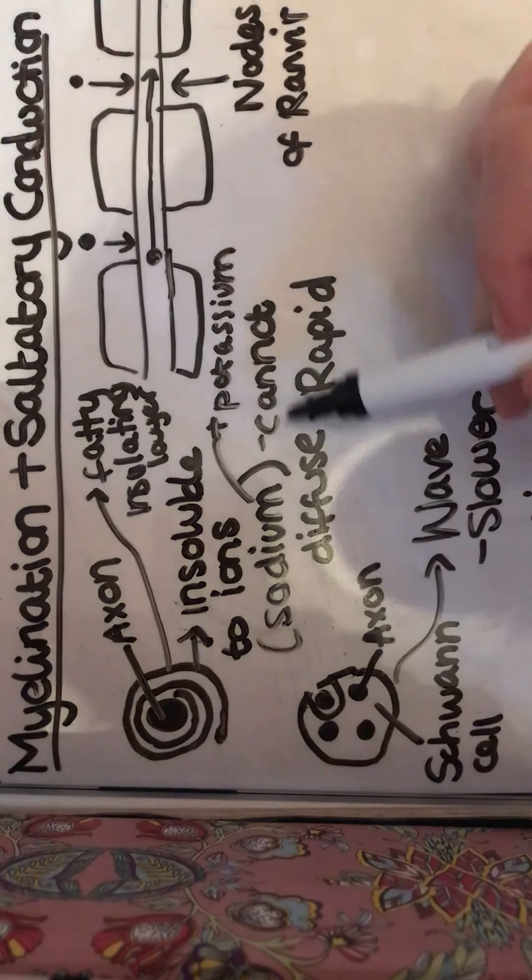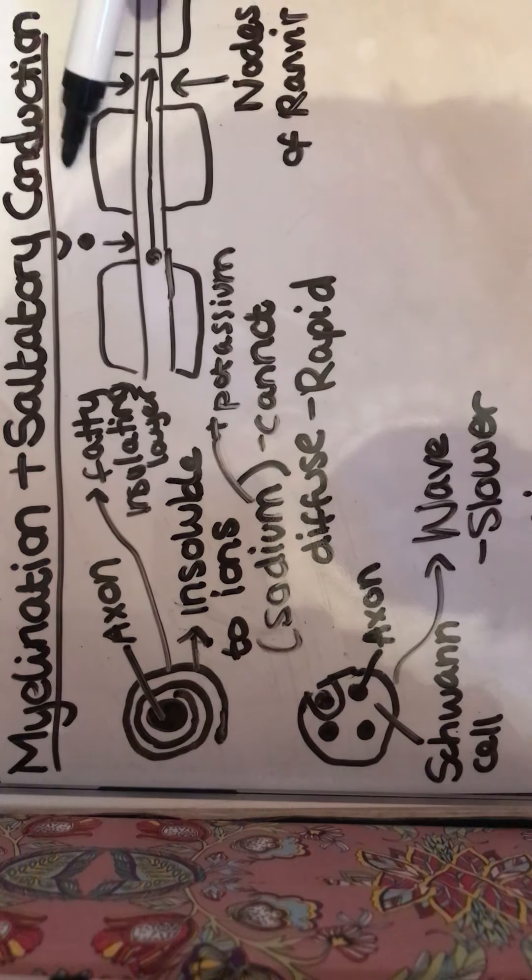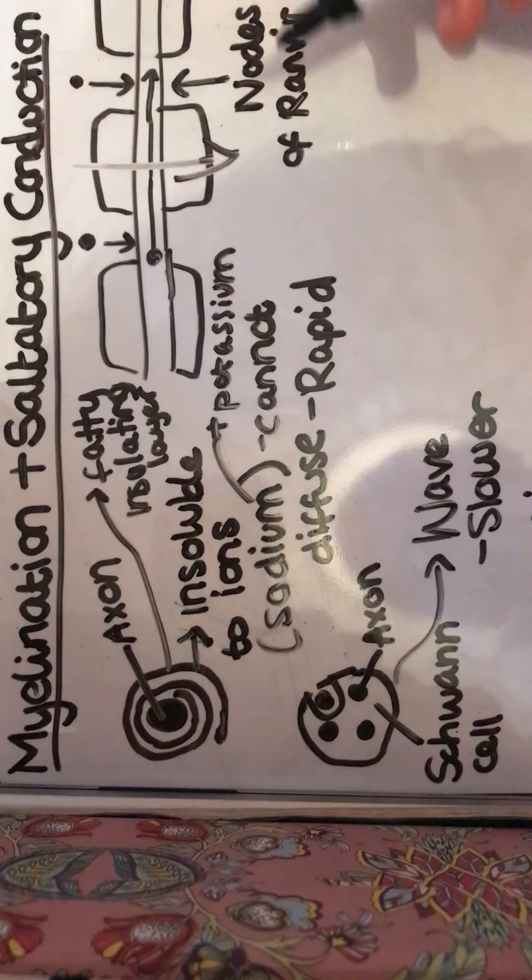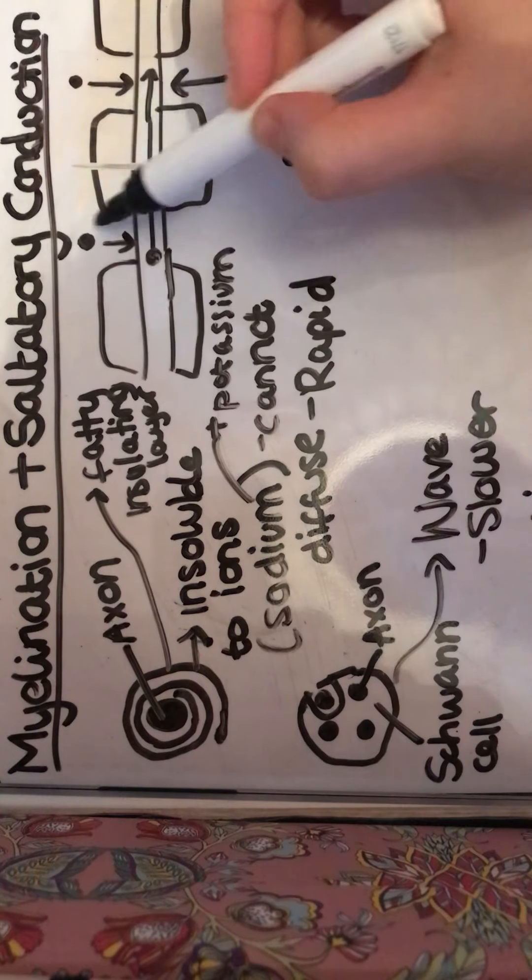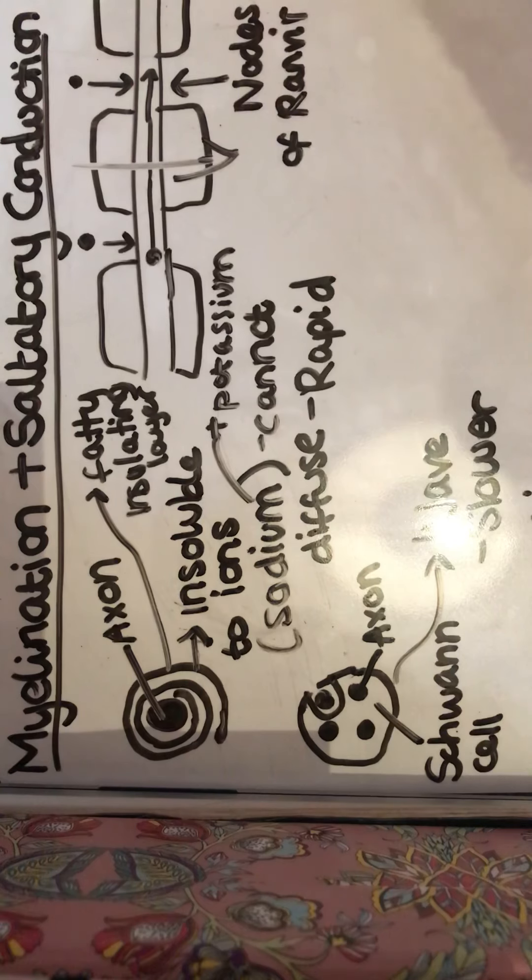So because our sodium and potassium ions cannot diffuse through this fatty layer here, they're going to have to be jumping, like you can see them coming here, through the nodes of Ranvier.